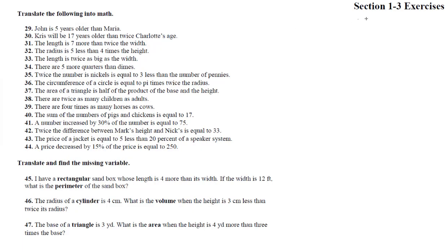Here we are in section 1.3 exercises with the answers and solutions to numbers 22 through 47. It says translate the following into math. We'll use variables J and M. John — that's the equal sign — is five years older than Maria, so J equals five plus M.